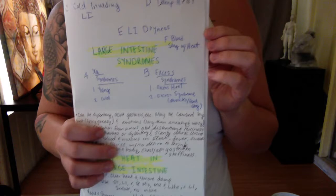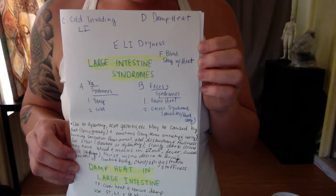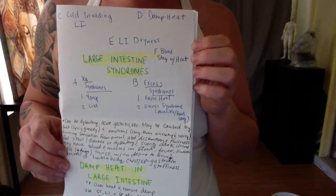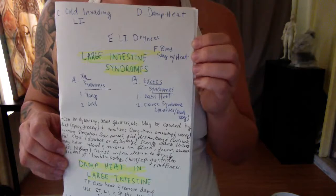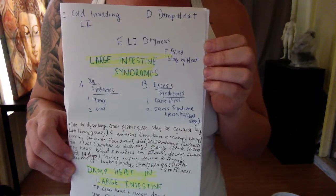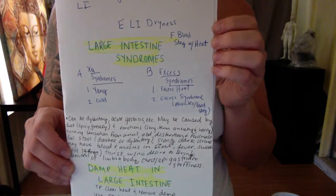Here we also have large intestine syndromes. We have deficiency syndromes, which are one, young, and two, cold. You have excess syndromes: excess heat or excess syndrome like parasites or food stagnation. You can also have cold invading the large intestine, damp heat invading the large intestine, large intestine dryness, and blood stagnation with heat in the large intestine.